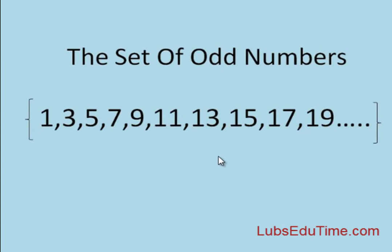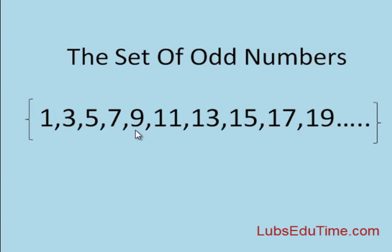You can have 2,005 — it is odd because it ends with 5. You can have 1,007 — it is odd because it ends with 7. So all these numbers cannot be divided by 2 without a remainder, and they end with 1, 3, 5, 7, and 9.